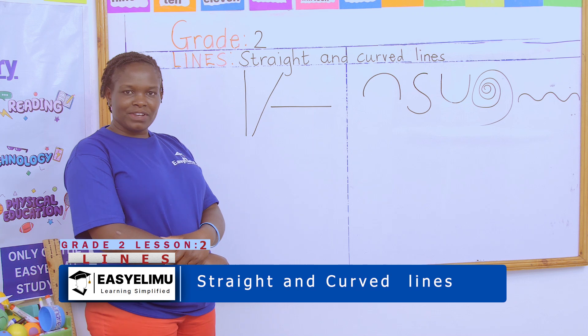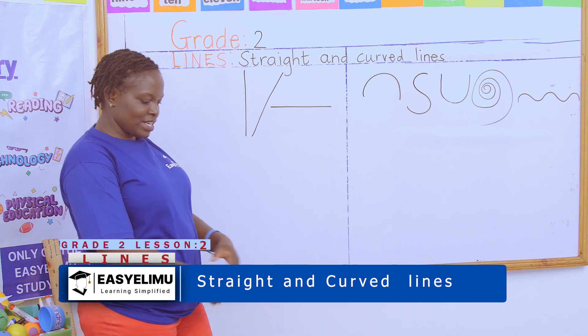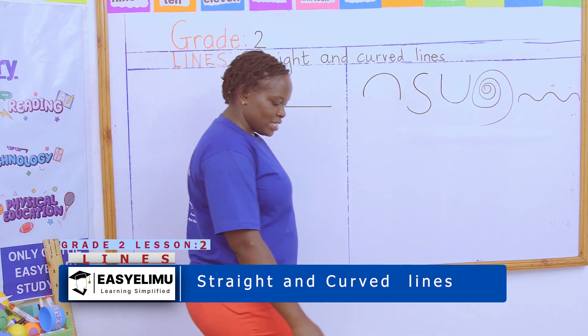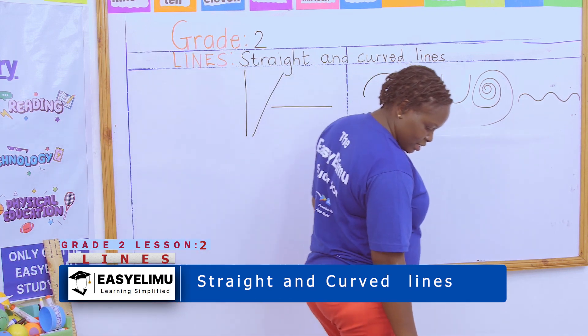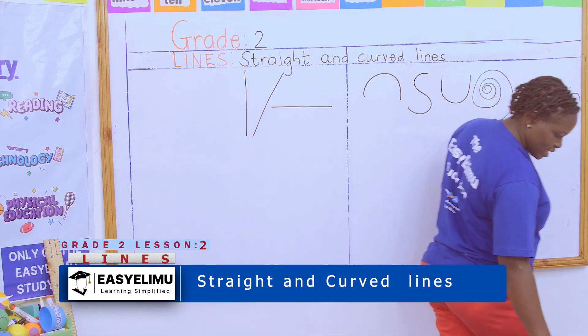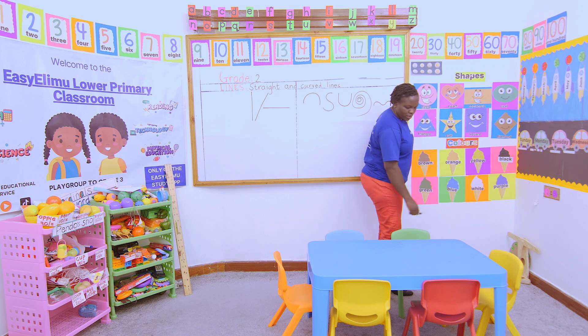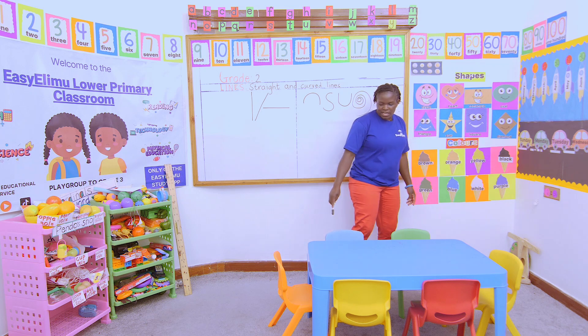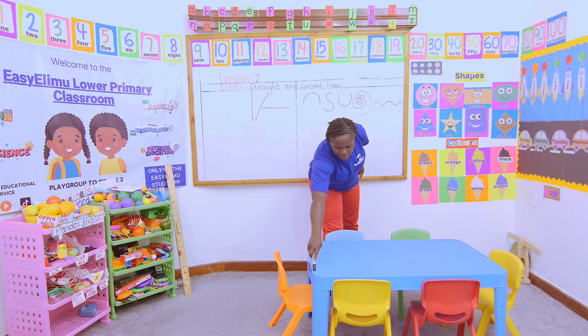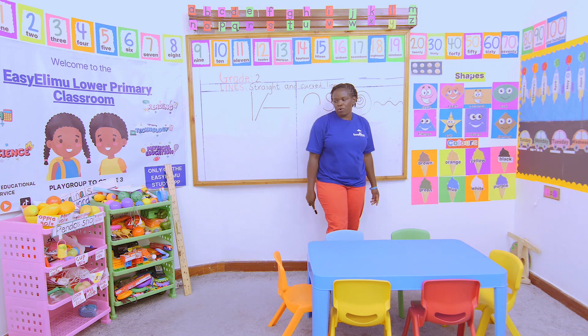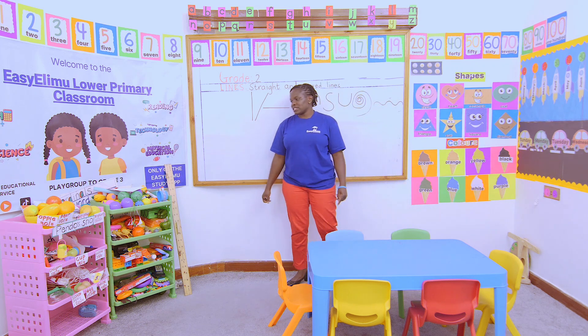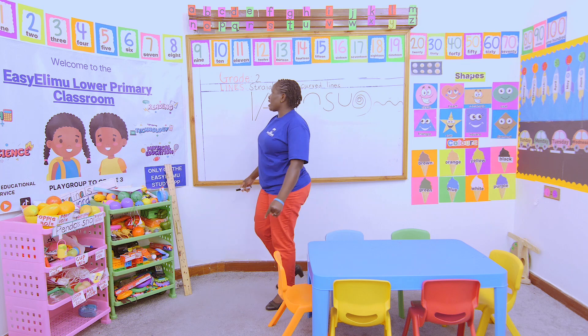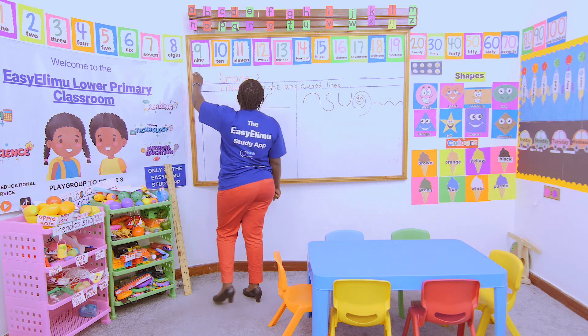Now we want to identify things that have straight lines in our class. Look at this table — is this a curved line? No, this is a straight line. Is this a curved line? No, this is a straight line. Look at our board up there.